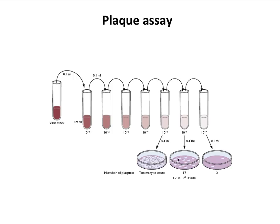You count each plaque and calculate the titer in PFU per ml. Here there are 17 plaques, giving a calculation of 1.7 × 10⁸ PFU/ml working back through all the dilutions. You typically want a plate with a countable number of plaques—not too few, because that introduces too much error, and not too many, because you can't count them reliably. Always plate a range of dilutions so that at least one gives a good number.